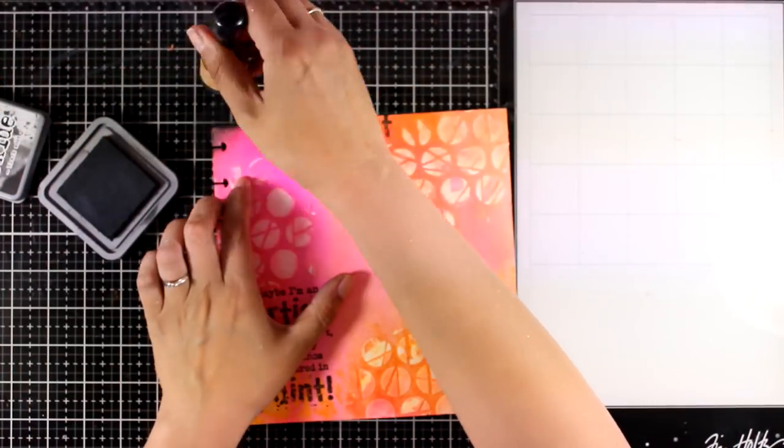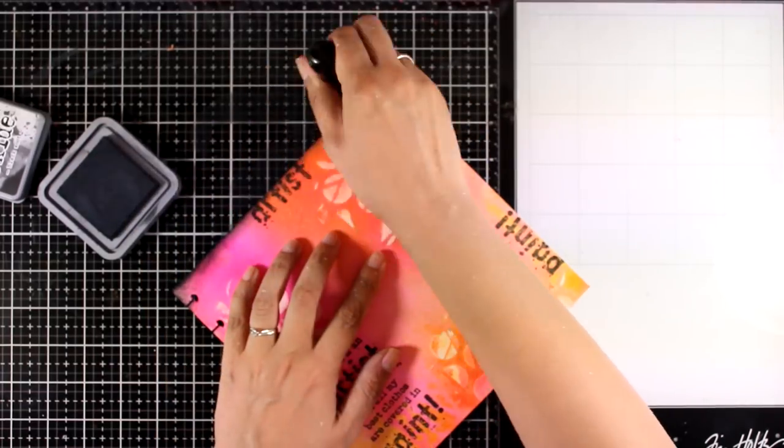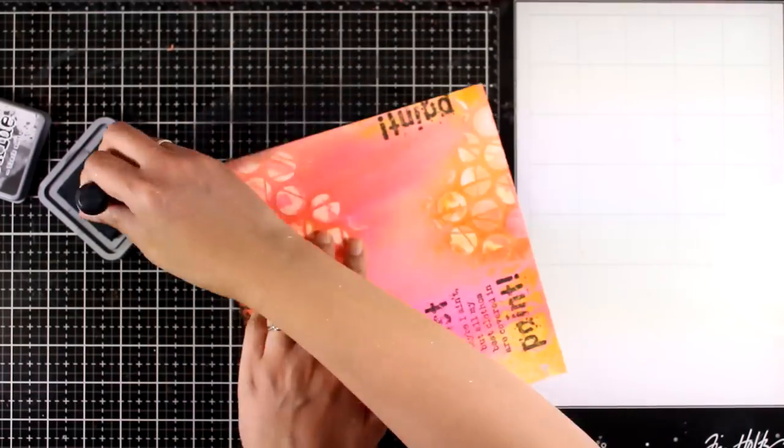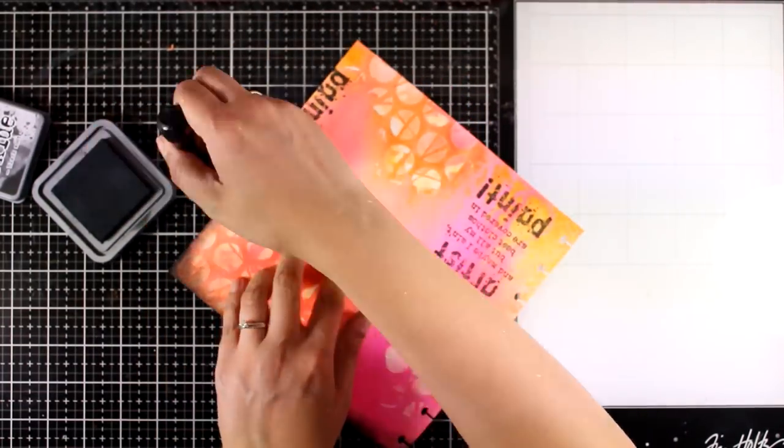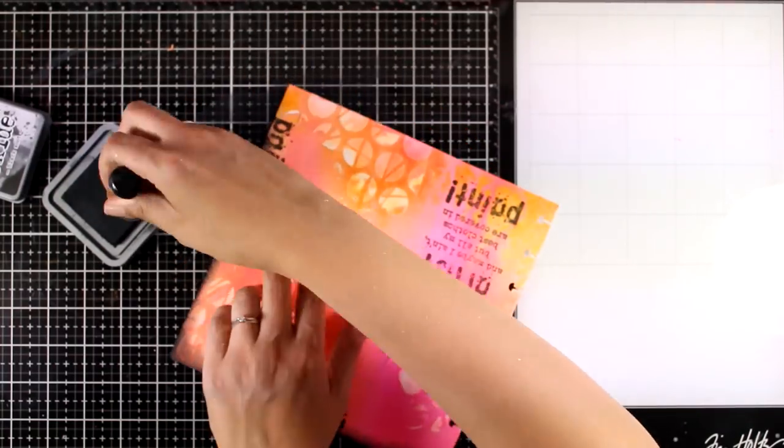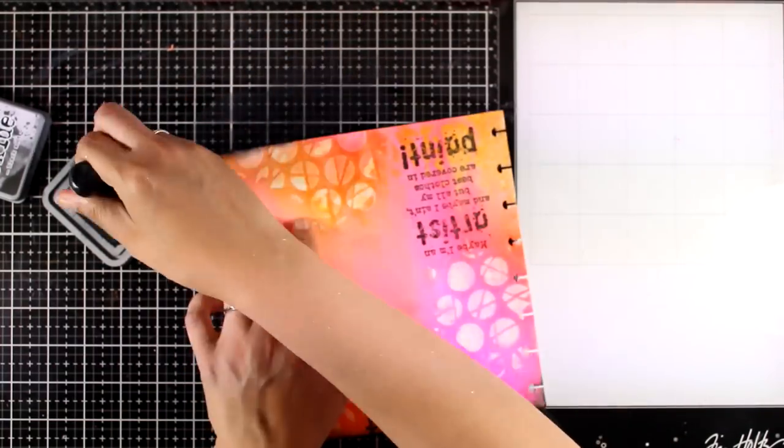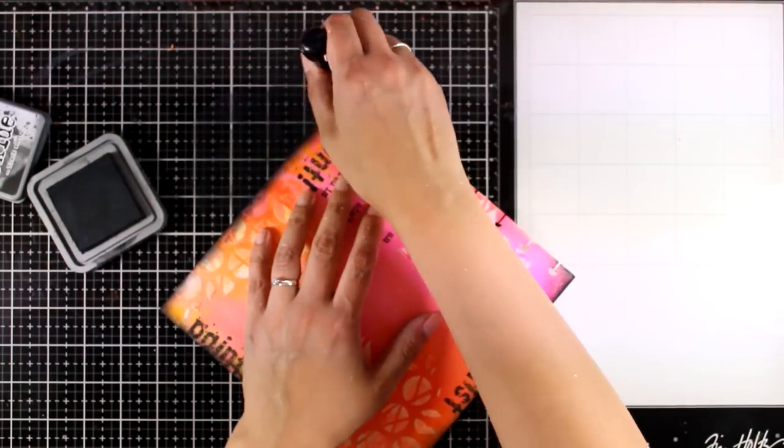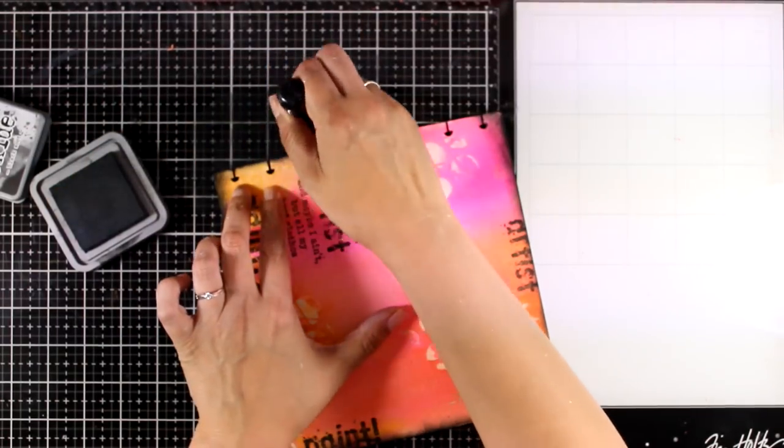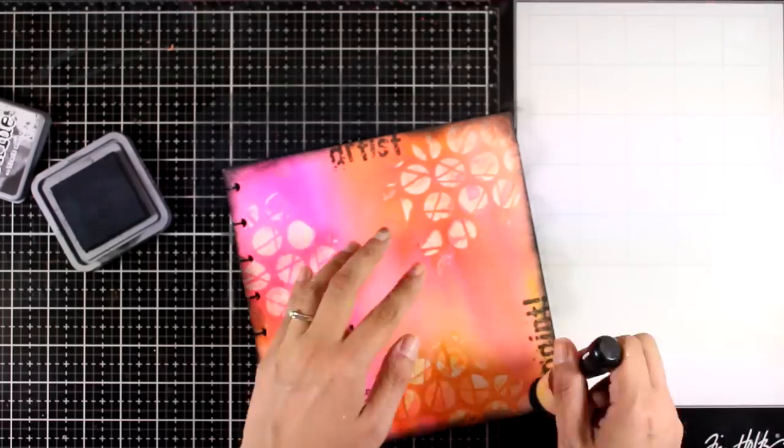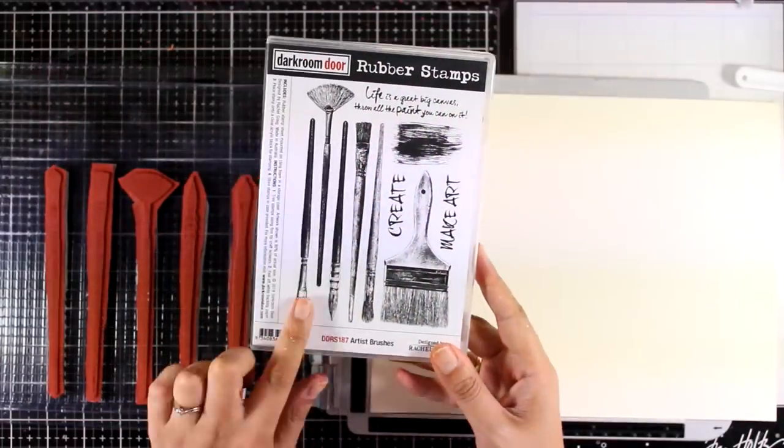I'm using my blending tool with black soot distress oxide ink and I'm going to ink up the edges. I always like to have a darker border around my page. I find that it helps all those bright colors to pop even more and it also provides a lovely frame and gives my project a finished look.